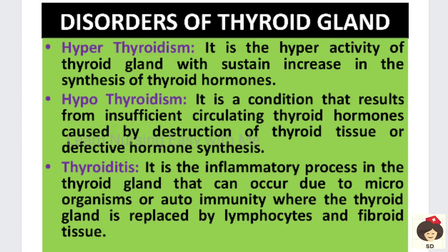Coming to the disorders of the thyroid gland — hyperthyroidism is hyperactivity or increased activity of the thyroid gland, resulting in more production of thyroid hormones. Hypothyroidism is decreased or insufficient function of the thyroid gland, caused by destruction of thyroid tissue or defective hormone synthesis. There is also a condition called thyroiditis, which means inflammation of the thyroid gland due to a microorganism or autoimmune disorder. In autoimmune disorder, the immune system identifies its own tissue as foreign and destroys it, replacing thyroid tissue with fibroid tissue.